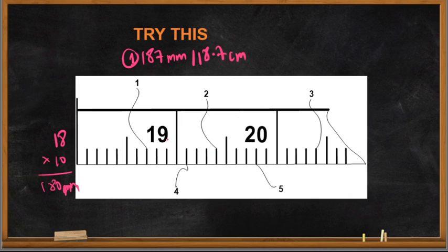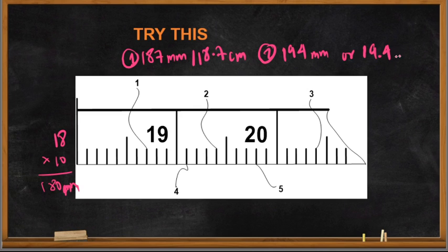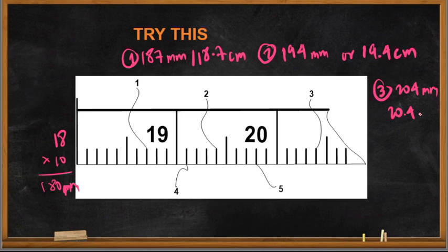For number two: 19 times 10 equals 190 mm, plus counting 1, 2, 3, 4 lines — so 194 mm, or 19.4 cm. For number three: 20 times 10 equals 200 mm, plus 4 lines — 204 mm, or 20.4 cm. For number four: 19 cm is 190 mm, plus 1 line — 191 mm, or 19.1 cm.